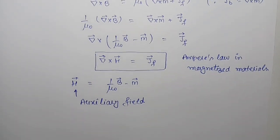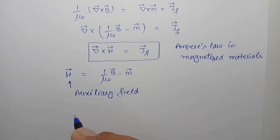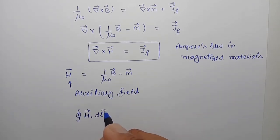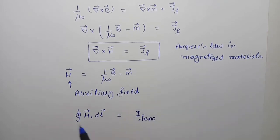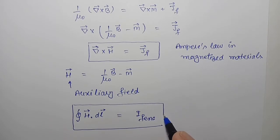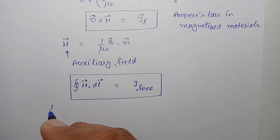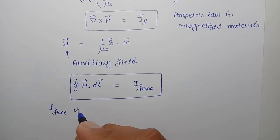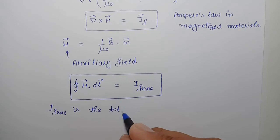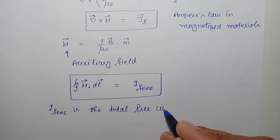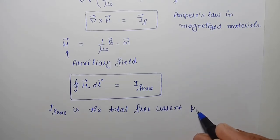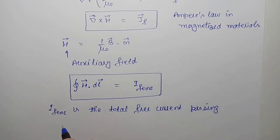We can also write this equation in integral form. The line integral of H dot dl equals I_f enclosed, where I_f enclosed is the total free current passing through the Amperian loop. This is Ampere's Law in integral form.